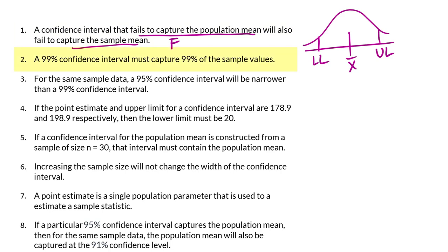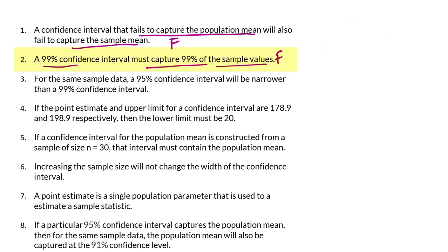Number 2: A 99% confidence interval must capture 99% of the sample values. That is also a false statement. A 99% confidence interval just means that if we use that procedure to construct the confidence interval, 99% of the time we expect to capture the population parameter. It does not mean it will capture 99% of the sample values.